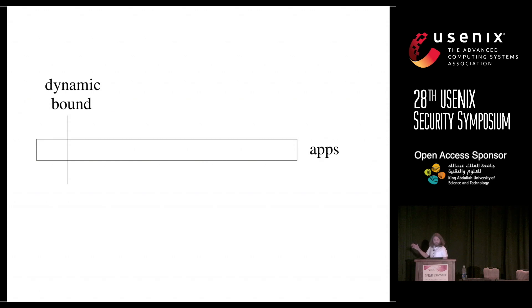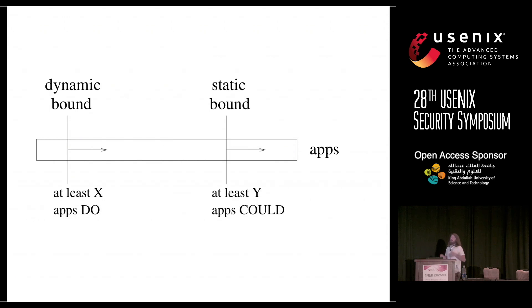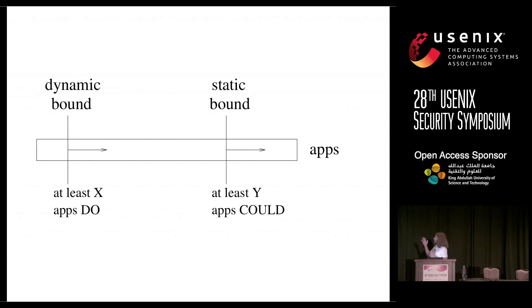We have a dynamic bound — we can say at least eight apps do this, as we saw during our experiments. With a static bound, we could say at least Y apps have the code and could do this, but we have no evidence they will ever actually run it. The dynamic bounds are much smaller, but they correspond to actual evidence.